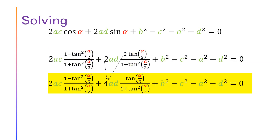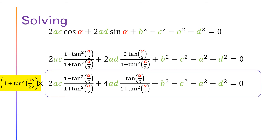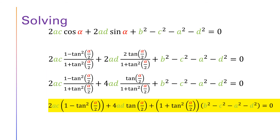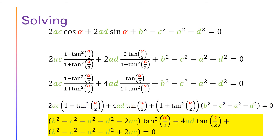In the second term, we have 2 times 2 that makes 4. Then we can multiply the equation by the denominator, which is 1 plus tan squared of half alpha. The denominator in the first and second terms will cancel, and we will have b squared minus c squared minus a squared minus d squared as a factor of 1 plus tan squared of half alpha. We can then reorganize the equation as follows: the terms multiplying tan squared of half alpha, then the term 4ac which multiplies tan of half alpha, and last the other terms.